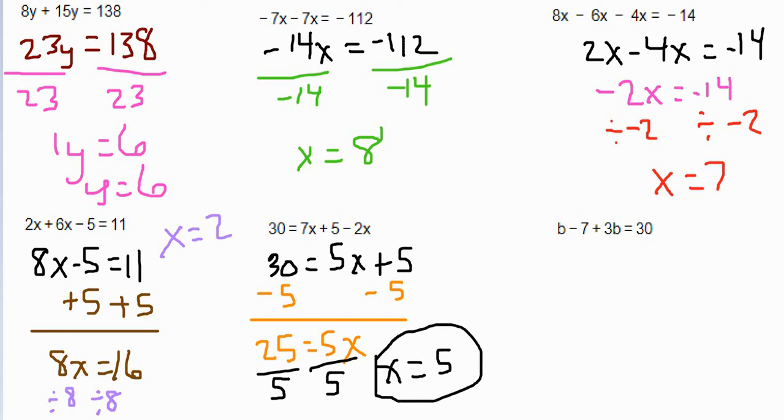On this last one, remember that b is the same thing as 1b. So I'm just going to put down the 1b there. So 1b and a positive 3b. We're combining like terms. 1b and a positive 3b make 4b. We'll put them together. So you have 4b minus 7 equals 30.